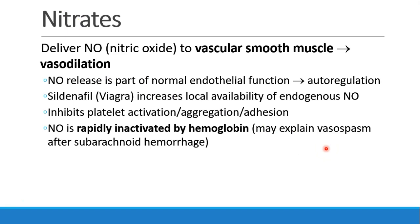Nitric oxide is also rapidly inactivated by hemoglobin. Interestingly, this might explain why patients who have an intracranial bleed like a subarachnoid hemorrhage develop vasospasm — because all of that free blood and free hemoglobin binds up the nitric oxide and prevents the endothelial smooth muscle from relaxing, leading to vasospasm.